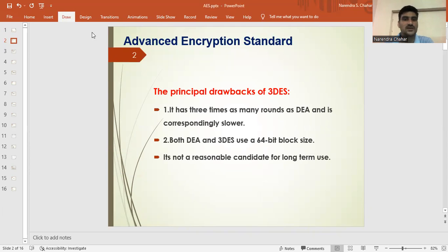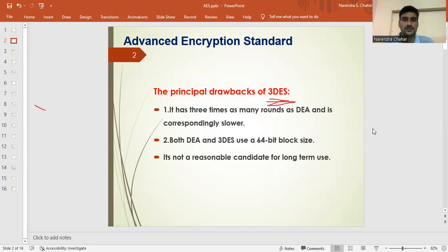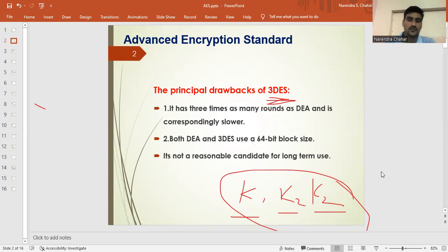First we discuss the drawbacks which were in the 3DES. It has three times as many rounds as data encryption algorithm and is correspondingly slower. Just because we are using two keys, K1, K2 and then again K1. This three-time encryption is a slow process. Both DES and 3DES use 64-bit block size which is easy to crack. It is not a reasonable candidate for long term use.